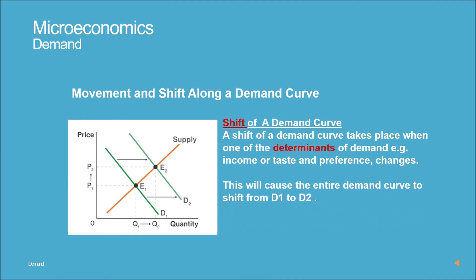Shift of a demand curve: a shift of a demand curve takes place when one of the determinants of demand — for example, income or taste and preference — changes. This causes the entire demand curve to shift from D1 to D2.